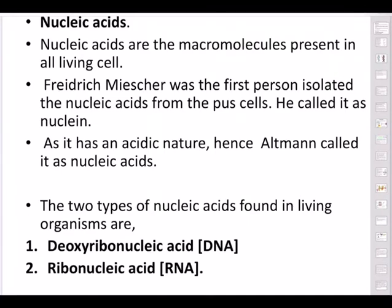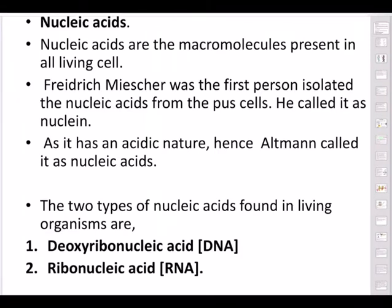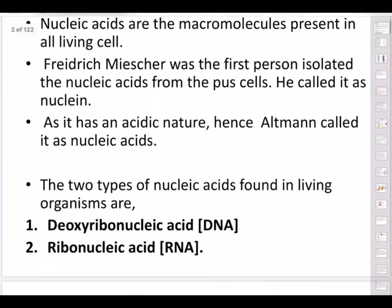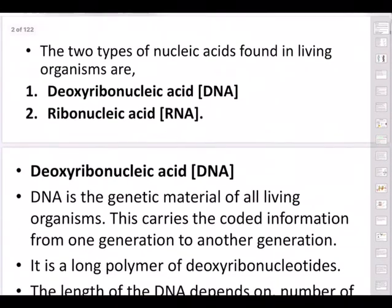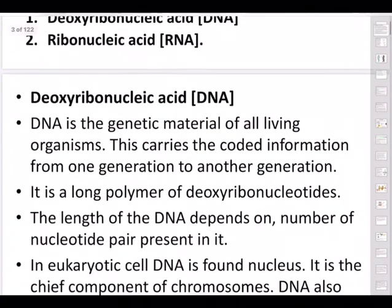Basically there are two nucleic acids. Nucleic acids are big molecules — macromolecules — present in all living cells. Frederic Miescher was the first person to isolate the nucleic acids from pus cells; he called it nuclein. Since it has an acidic nature, Altman called it nucleic acids.